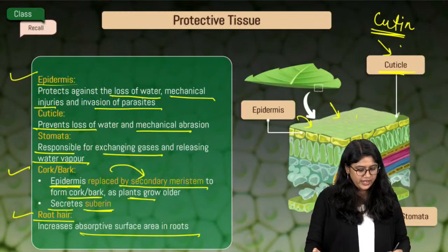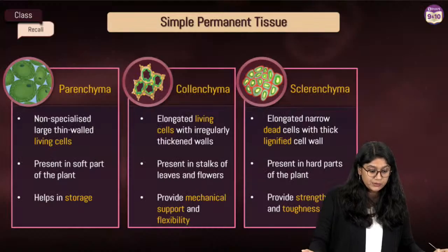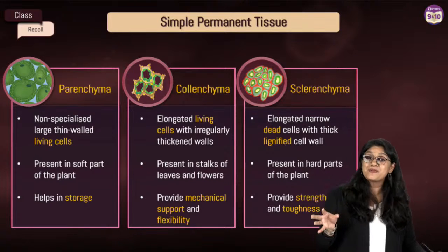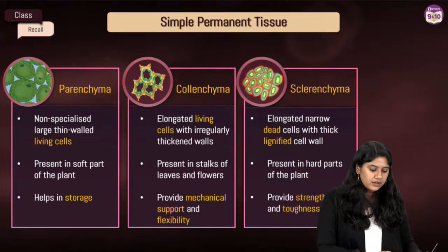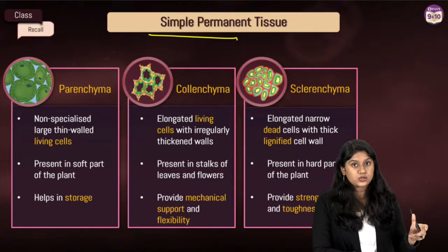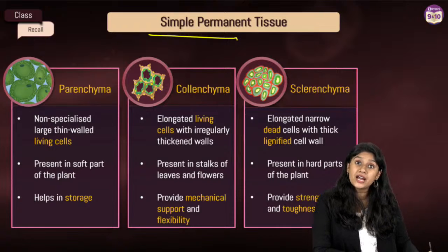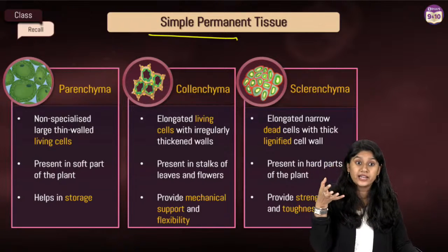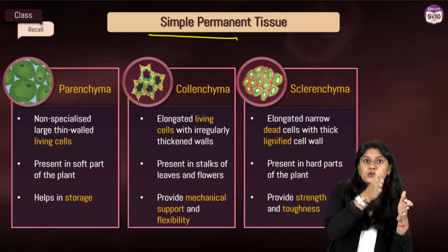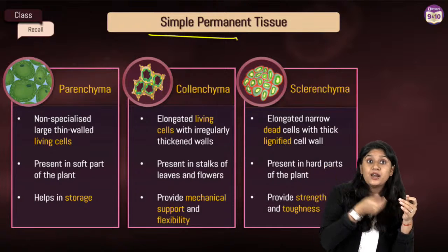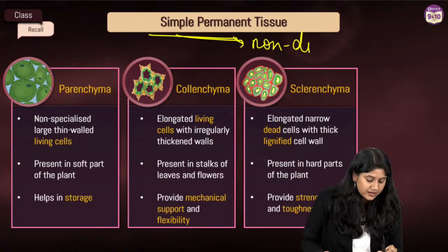We are done with meristematic tissue and protective tissue. Now we are moving to the simple permanent tissue. Meristematic tissues are the living, actively dividing cells. Permanent tissues are those whose cells will not divide — they have lost their capacity to divide.